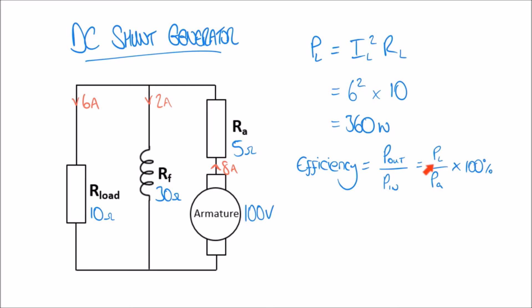We know PL but we need to calculate the armature power first, using the formula P equals I times V. We use the armature current and the original voltage produced at the armature: Ia is 8 amps and the armature voltage is 100 volts, so the input power is 800 watts.